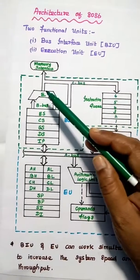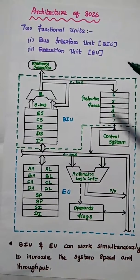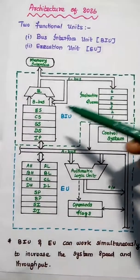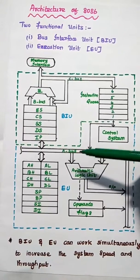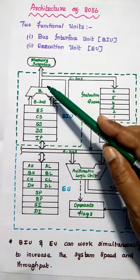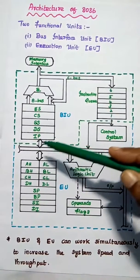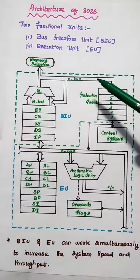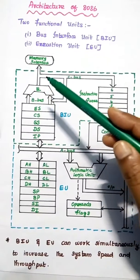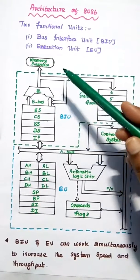The address summer is used to convert the 16-bit logical address into a 20-bit physical address. As we know, the 8086 microprocessor has a 20-bit address bus, but the registers are 16-bit wide. So we have to convert the 16-bit address into a 20-bit address using this address summer. The segment registers along with pointer and index registers are used to generate this 20-bit physical address.